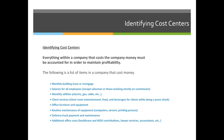A company also has to pay monthly utilities — electric, gas, cable, water, and whatever else. Many companies have client services budgets covering entertainment when clients are on press for eight hours — food, beverages, and so on. Office furniture and equipment like printers, chairs, and tables need periodic replacement. There's also routine maintenance on servers and printing presses, a delivery truck and its maintenance if you deliver your own goods, and additional costs like healthcare and 401k contributions.